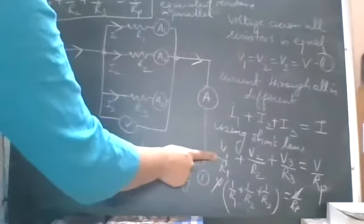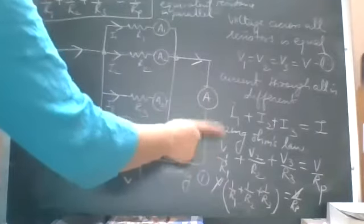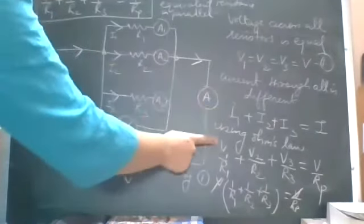Now in this equation, we used Ohm's law. V equals IR. If we write I in the form, it will be V by R.